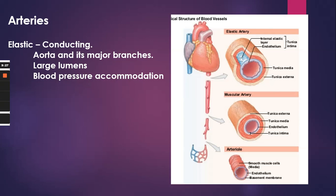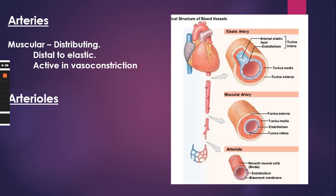As we move from the elastic arteries and they branch even more, they're going to branch into what we call muscular arteries — also called distributing arteries, because they distribute the blood to all of the major organs and different places in the body. They are distal to the elastic arteries and deliver blood to the body organs. In lab you learned the wall differences between elastic and muscular arteries. Looking at the picture, you can see the difference in the walls. What I want you to look at is the muscle layer — the tunica media.